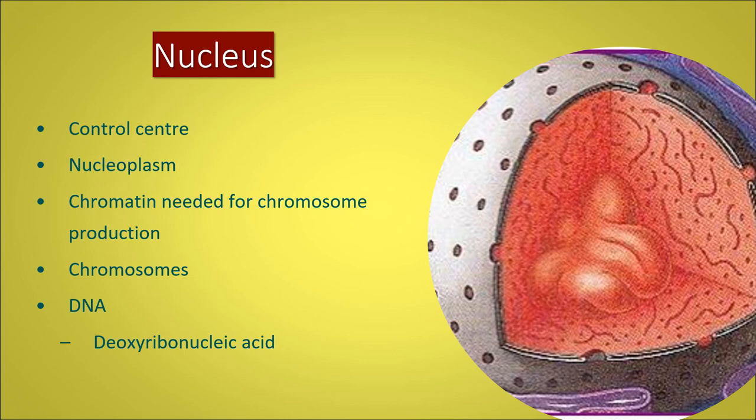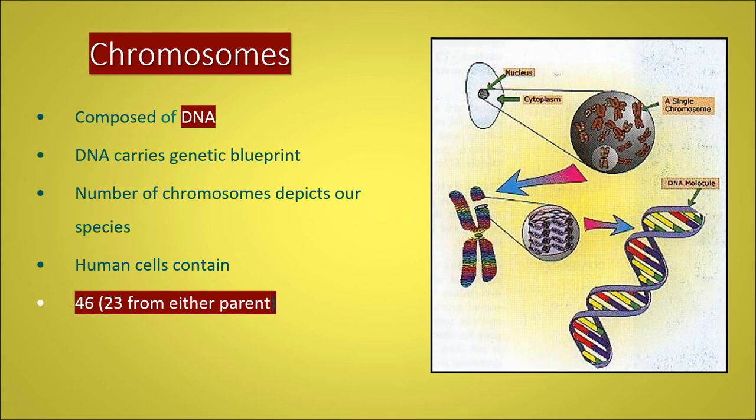Chromatin is a chemical that's needed for chromosome production. Chromosomes are composed of DNA. A chromosome, the word, comes from chroma and som. Chroma means color. And these DNA strands are very colorful. And som is body. Apparently, these chromosomes and their strands of DNA are what depict what species we are. As human beings, we have 46 chromosomes that make up us as human beings. We have 23 from either parent.